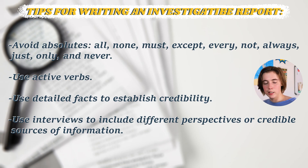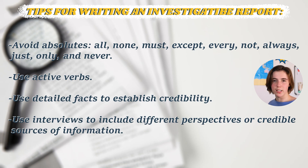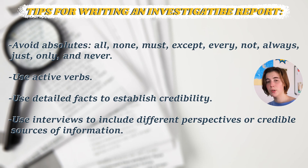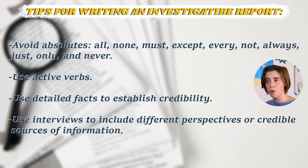The second thing investigative journalists use frequently is active verbs, because even though you are trying to uncover facts, you're still writing a story and a story needs to be interesting. Using active verbs is a great way to inject energy into your writing. Third, use detailed facts to establish credibility. The last thing you want is to be vague, which would go against the point of an investigative news report — which is to provide clarity. Incorporating details into your facts makes your writing more convincing and helps establish credibility.